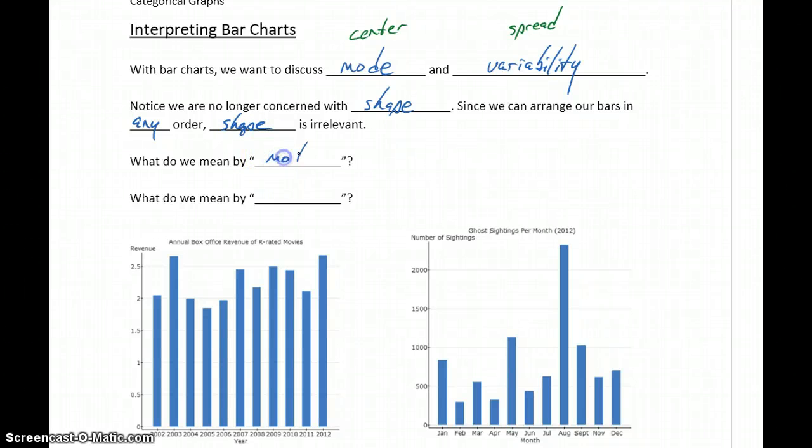So what do we mean when we say mode? Mode is the category with the highest number of counts.